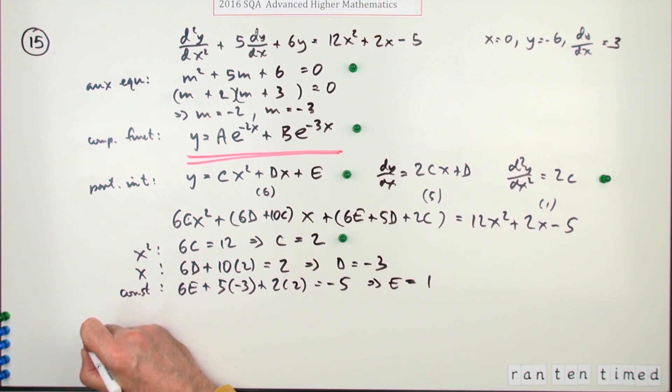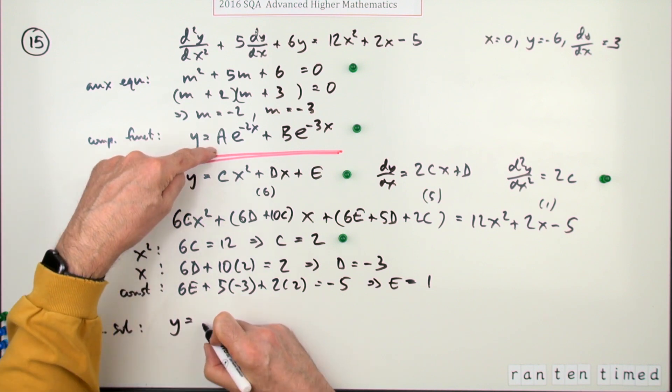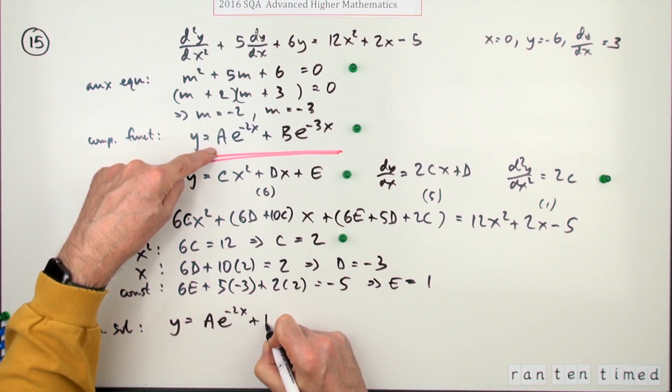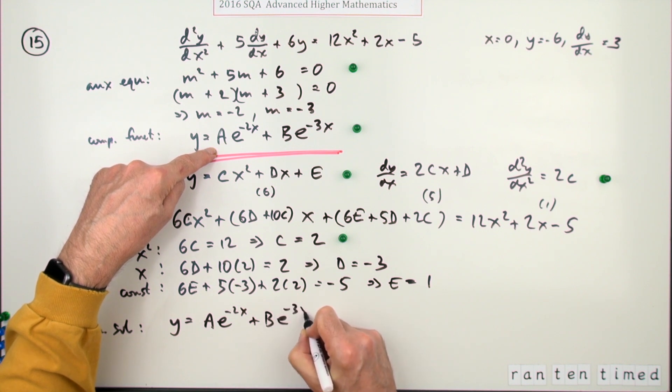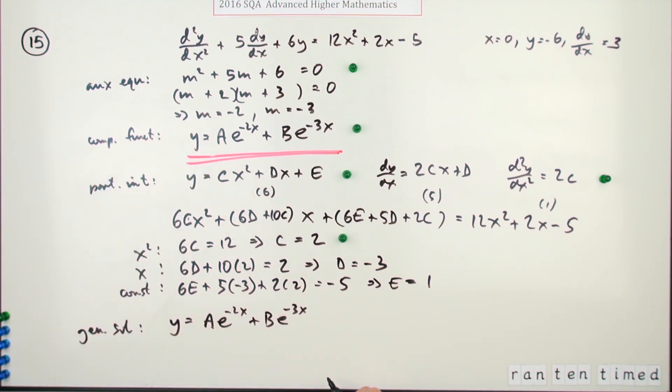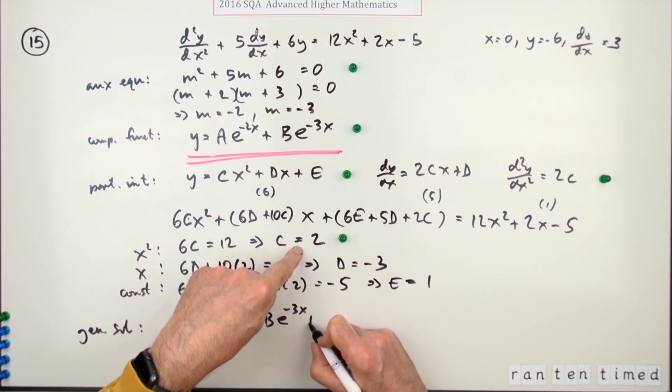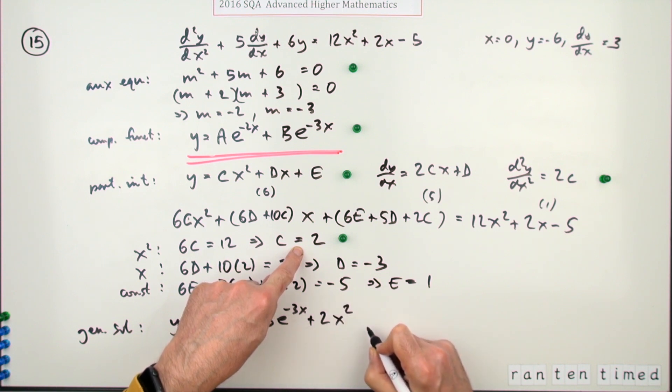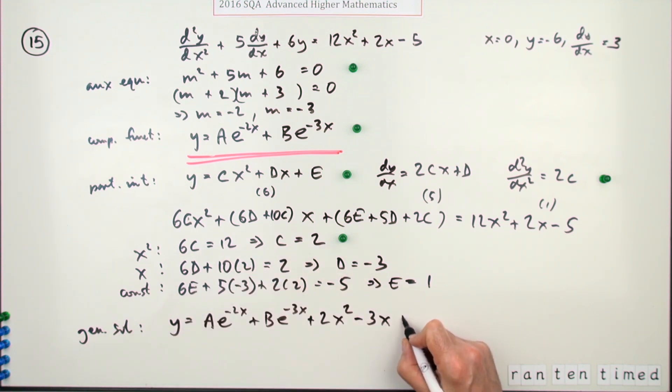So you could say the mark comes here or where you put it all together for the general solution, whatever. So general solution then is y equals, and here we go: Ae to the negative 2x, Be to the negative 3x. So you may have put them the other way around in numerical order, and then the rest of it is c, which is plus 2x squared minus 3x plus 1 for the sixth mark.